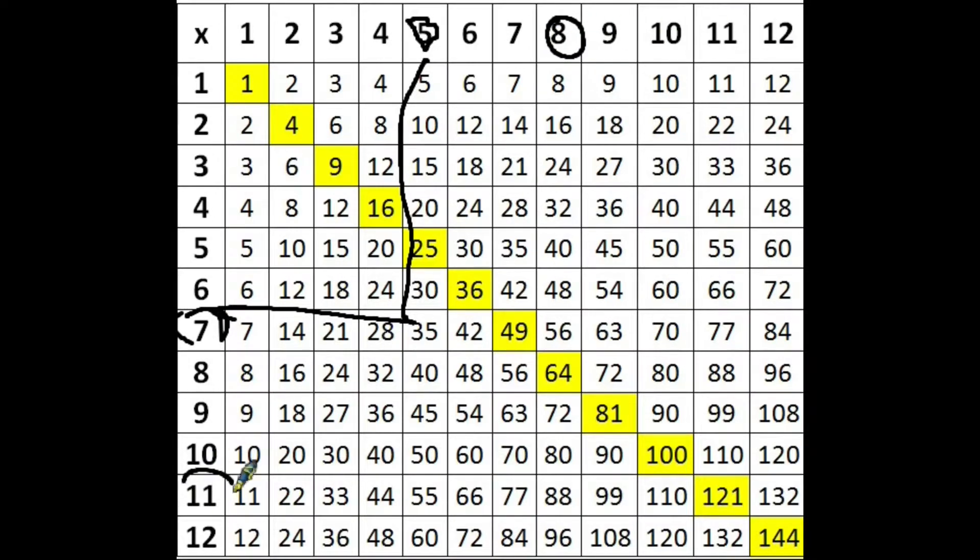So again, eight times 11, move it along there, bring it down there and you've got 88. So that's good for learning your timetables in general. But what is useful in quite a lot of these times table grids, you will see that running from the top left down to the bottom right are numbers in yellow.